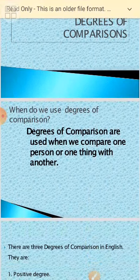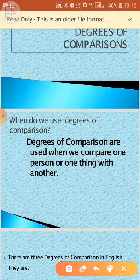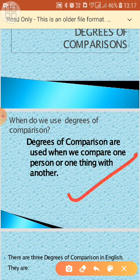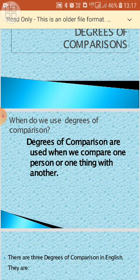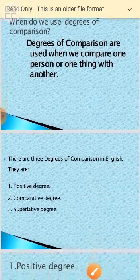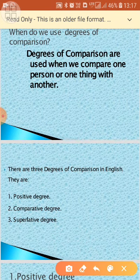All of you know about adjectives. When these adjectives are used for comparison, they are called degrees of comparison. Degrees of comparison are used when we compare one person or one thing with another. There are three degrees of comparison: Positive, Comparative, and Superlative.